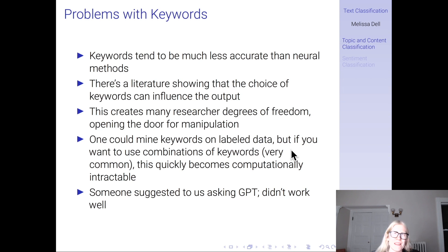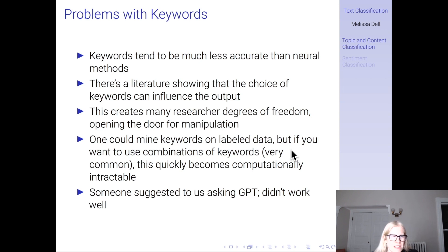Whereas if you have a method that's already 98% accurate at base, and then you make some changes to that, there's just less scope — even if someone is nefarious — for there to be manipulation.